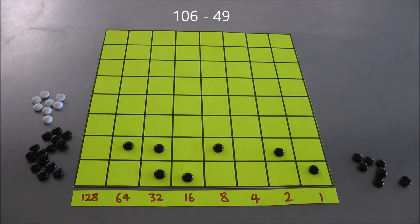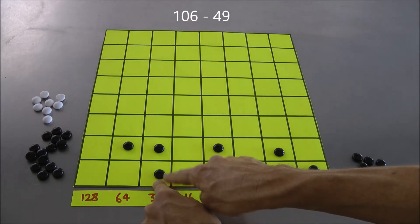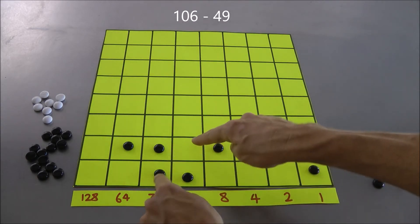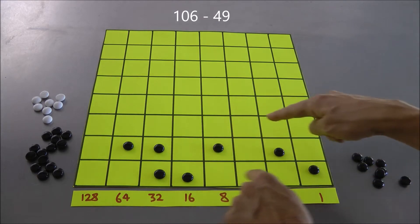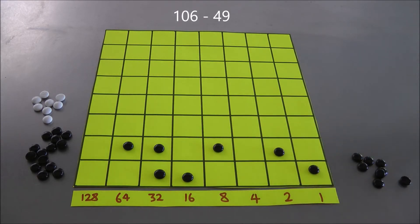So what we literally have to do is subtract the bottom row, 49, from the top row, 106. Well, that's fine here because it shows me I need to subtract one dot from there, which I can do, but I can't subtract one dot from there, it's empty. I also need to subtract one dot from there, which I can't, it's empty.